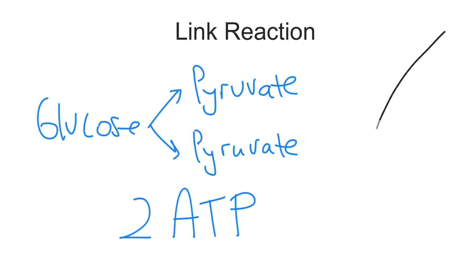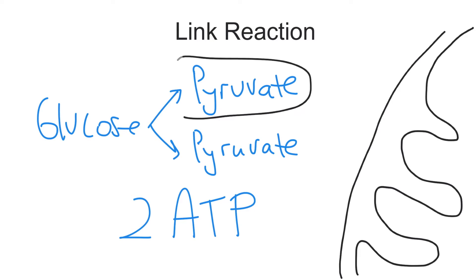So here is the mitochondrion with its double membrane. The pyruvate molecules are in the cytoplasm. If molecular oxygen is present, the pyruvate enters the mitochondrion.